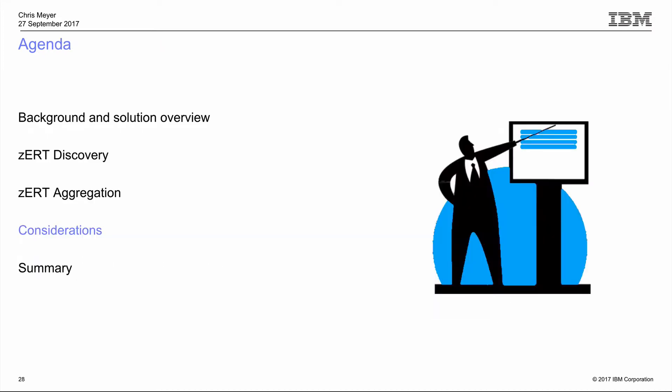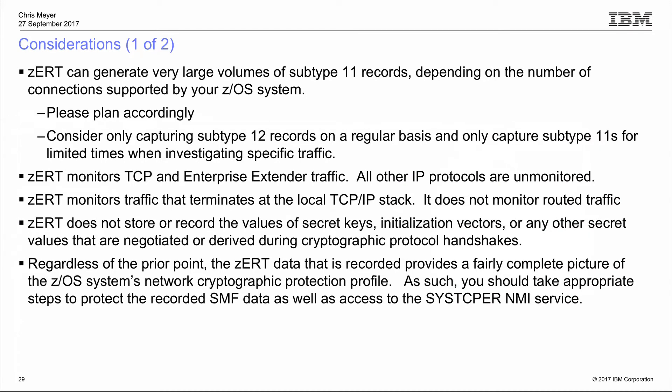Some considerations: subtype 11 records can come out in very large volume — plan accordingly, and if that volume is a problem, consider using the subtype 12 records (available first quarter 2018). zERT monitors TCP and Enterprise Extender traffic only; all other IP protocols are ignored. It only monitors traffic that terminates on the local TCP/IP stack — if you use your z/OS TCP/IP stack as a router, routed traffic is ignored.